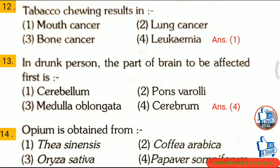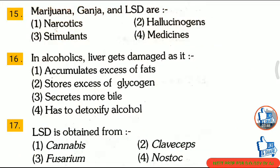Question 14: Opium is obtained from — the correct answer is option 4: Papaver somniferum. Question 15: Marijuana, ganja, and LSD are — first, narcotics; second, hallucinogens; third, stimulants; fourth, medicine. The correct answer is option 2: hallucinogens.